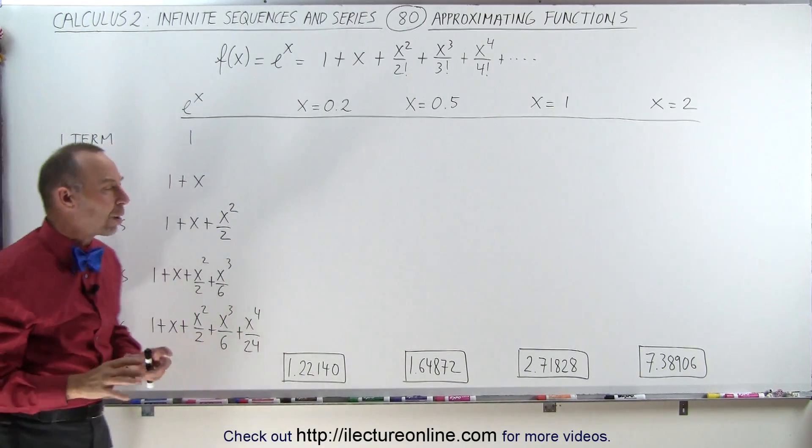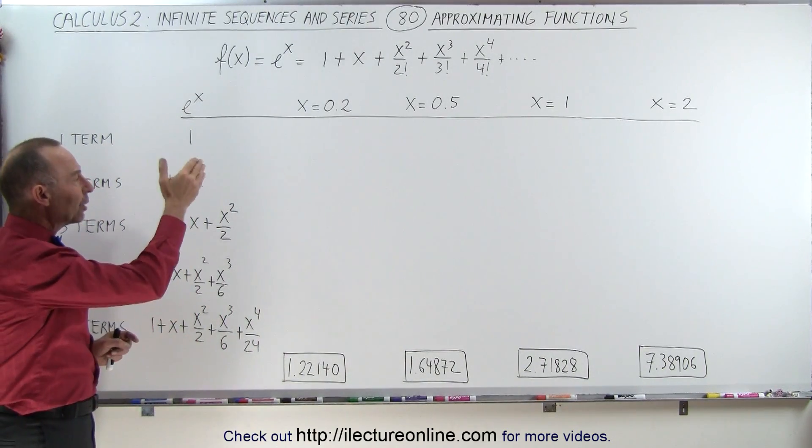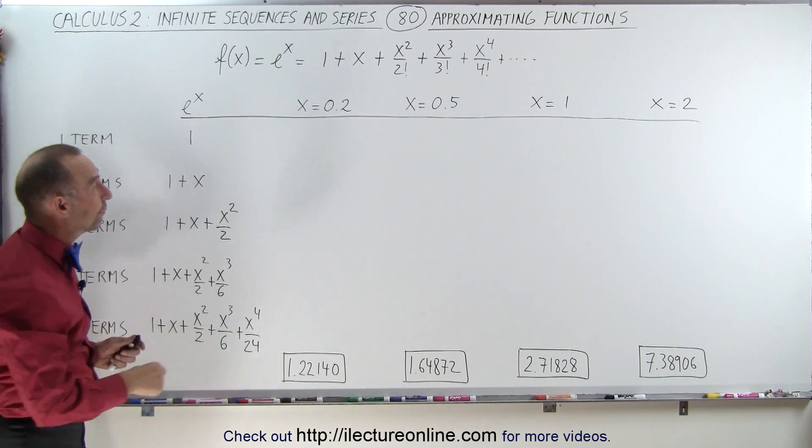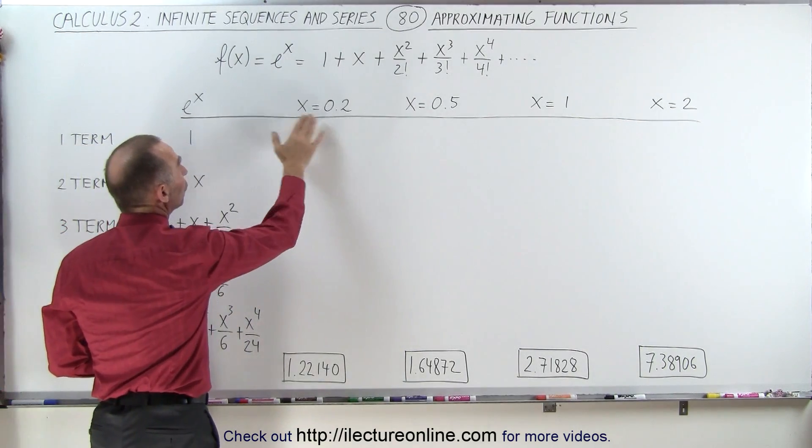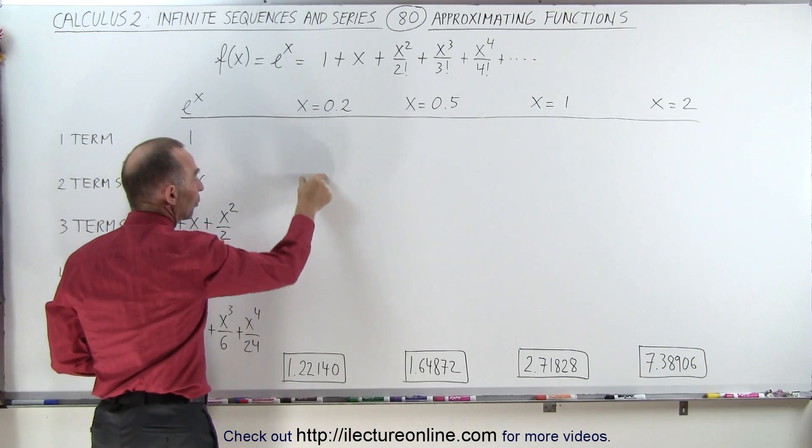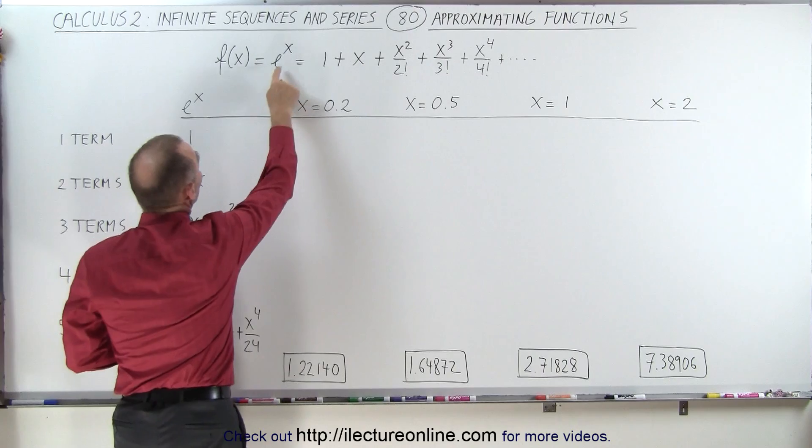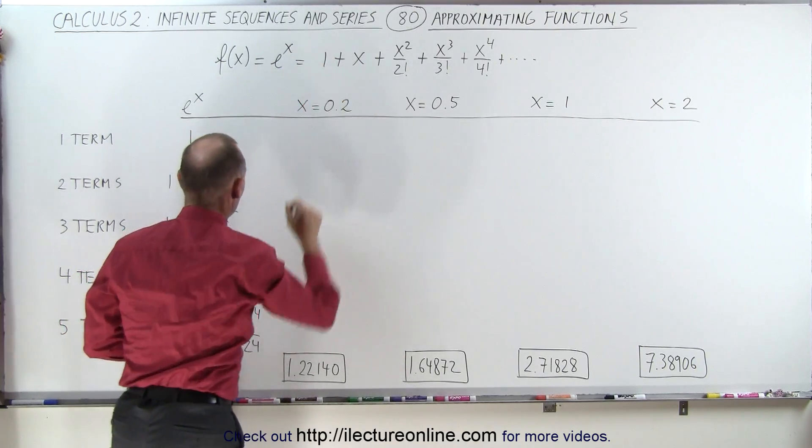Now we're going to see how quickly the value will converge to the correct value, and you'll see that for values of x being closer to 0, that convergence will go very quickly. Matter of fact, when x equals 0, e to the 0 is equal to 1, which is equal to the first term.